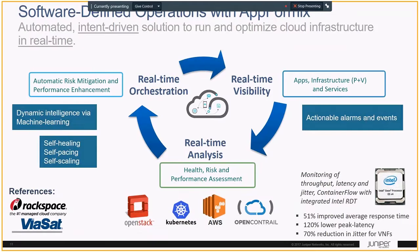A recent acquisition by Juniper was AppFormix, which allows greater analytical power and real-time visibility into the compute environment. There's self-healing, self-pacing, and scaling now computed within AppFormix, which provides automation — or steps towards the autonomy I mentioned earlier. By having real-time actionable data about the state of the network provided by AppFormix, it allows the network to become one step closer to being a more autonomous network.